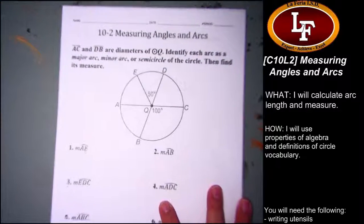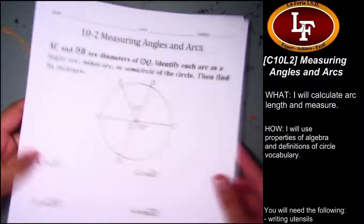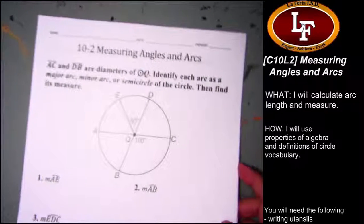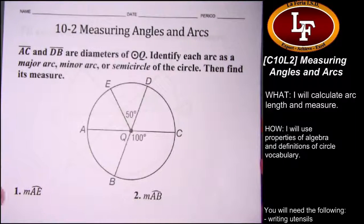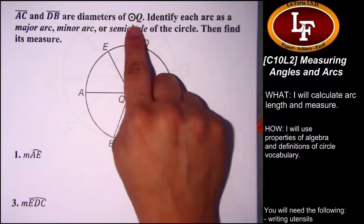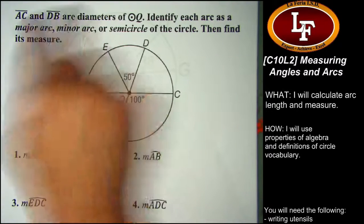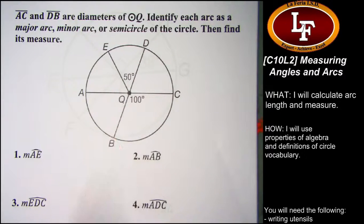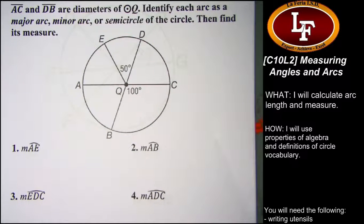Here we go. Let's take a look at the first page. I'm using a large font version of the worksheet so that it shows up better on camera. The first section tells you that you've got circle Q with diameters AC and DB. They want us to identify each arc below as a major arc, minor arc, or semicircle, and then find its measure.